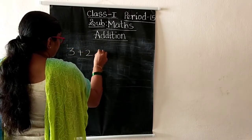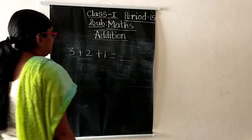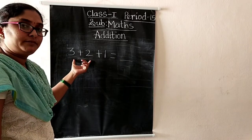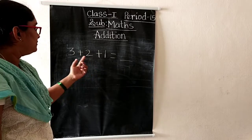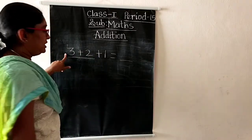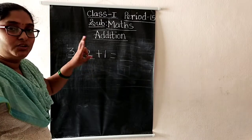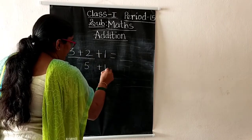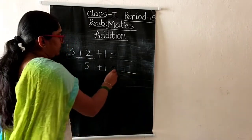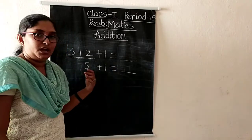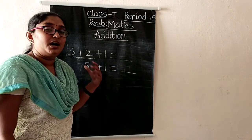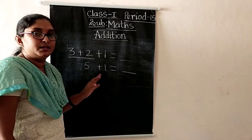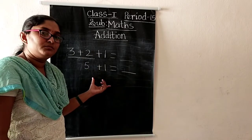Three plus two plus one equals dash. So first we add the first two numbers: three and two. Three in the mind, take two fingers. Three after: four, five. We got five. And the remaining number is one. We already said the one-number concept: if you add one to any number, the next after-number will be the answer. So five plus one equals six.